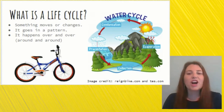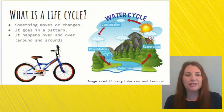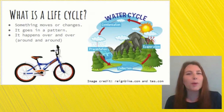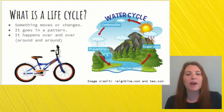When scientists talk about living things like plants and animals, we talk about how things go around and around, meaning they kind of go through a pattern, and then they start back over again.